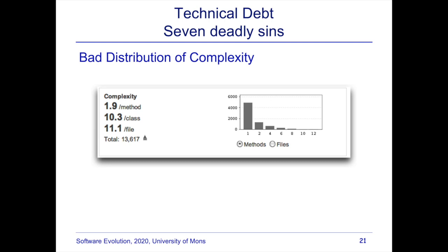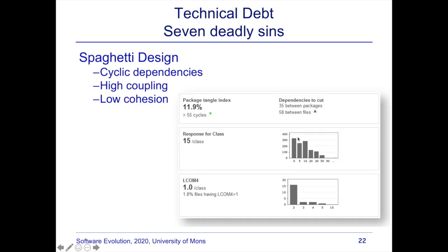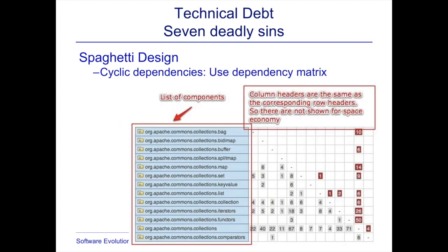Complexity is another deadly sin, related to Lehmann's law of increasing complexity. Tools can compute cyclomatic complexity at method, class, or file level. An example showing most methods with complexity of one or two, and very few with high complexity, is considered acceptable. Spaghetti design — related to high coupling, low cohesion, and cyclic dependencies — can also be measured using coupling, cohesion, and dependency metrics.